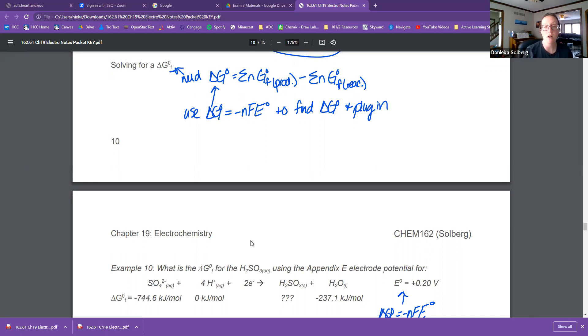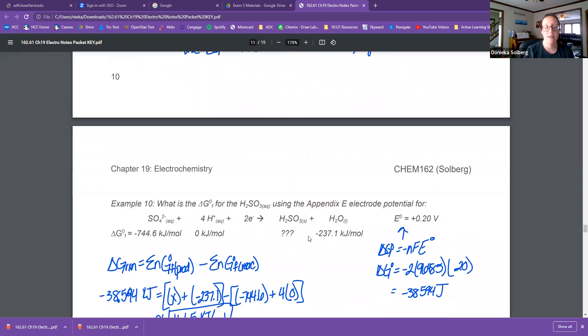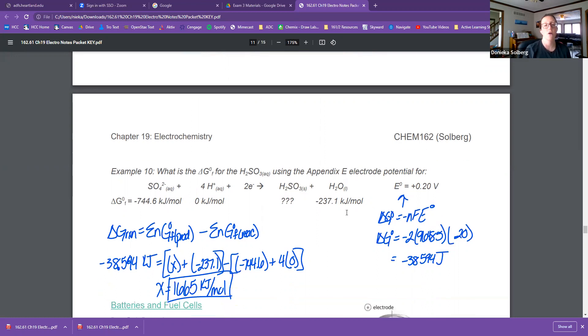This is kind of like an integrated example, so I recommend trying it really quick. So pause here. And then I'm going to go over this one. So it says, what is the delta G not of formation for sulfurous acid using the appendix E electrode potentials for this equation? So actually, you don't even have to do that because I gave you the E not.